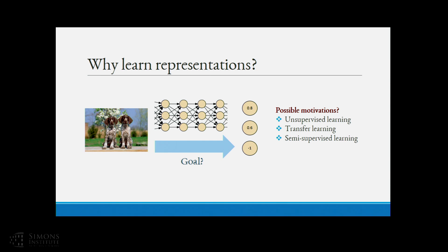Before we do any formal definitions, let's intuitively think of what we want out of our model. Our approach to thinking about the goal of representation learning is motivated by the variety of uses and success stories it has had: unsupervised learning, where representation learning helps discover structure in data; transfer learning, where features learned for one task seem relevant for other seemingly unrelated tasks; and semi-supervised learning, where a good representation helps do classification with fewer labeled samples.